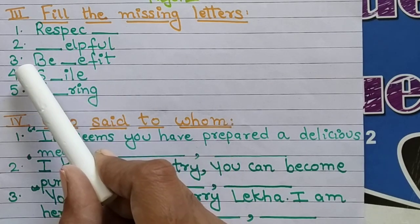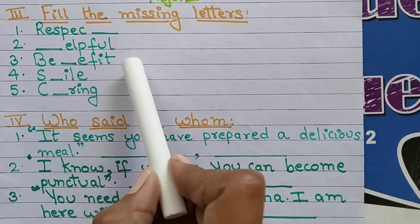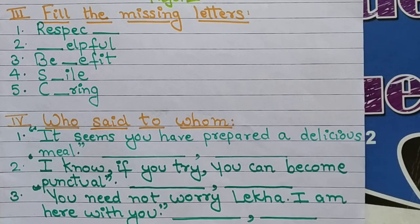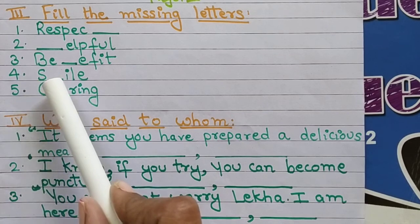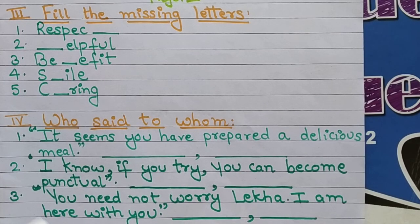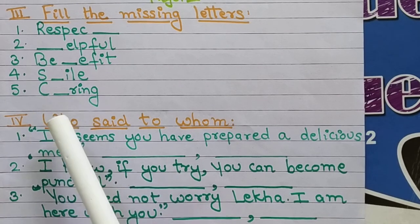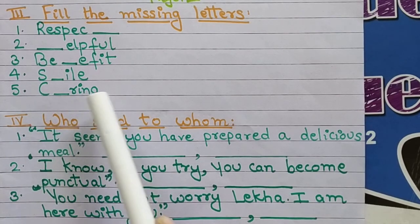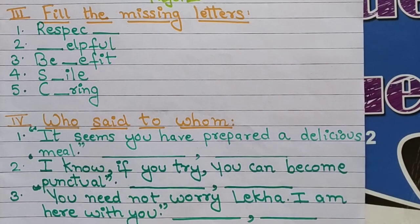Third: B, E, dash, E, F, I, T — yahan pe bhi aapko kya karna hai? Yahan pe jo blank diya gaya hai, vahan pe fill karna hai ki kaun sa letter vahan pe missing hai. Fourth: S, dash, I, L, E — yahan pe bhi jo letter missing hai, aap usi yahan pe likhoge. Fifth: C, dash, R, I, N, G — yahan pe bhi aapko fill karna hai, jo bhi missing letter hai.